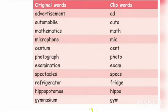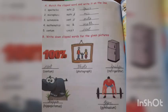Here are some more words — original words and their clipped forms. Look at the book, children. Advertisement → ad, automobile → auto, mathematics → math, microphone → mic, symptom → scent, photograph → photo, examination → exam, spectacles → specs, refrigerator → fridge, hippopotamus → hippo, gymnasium → gym.